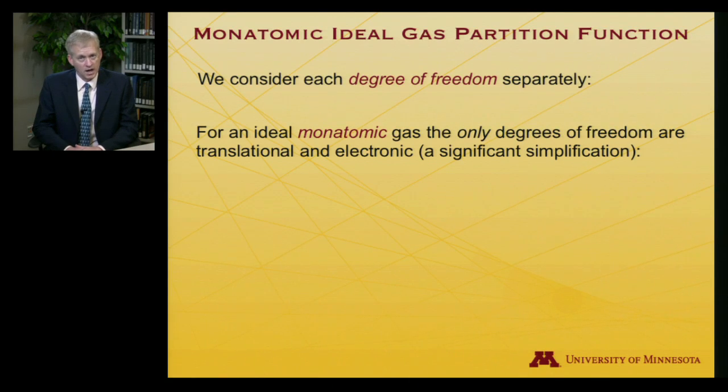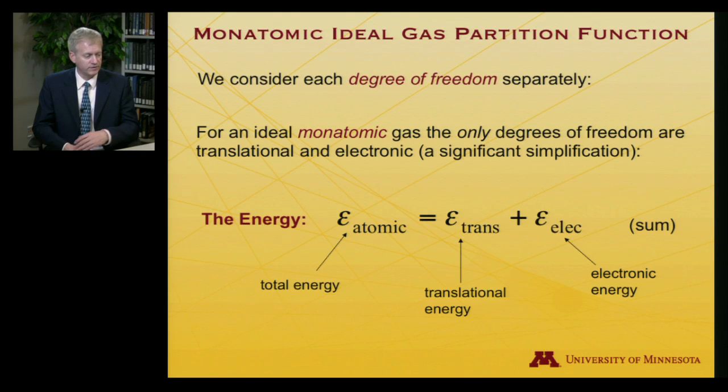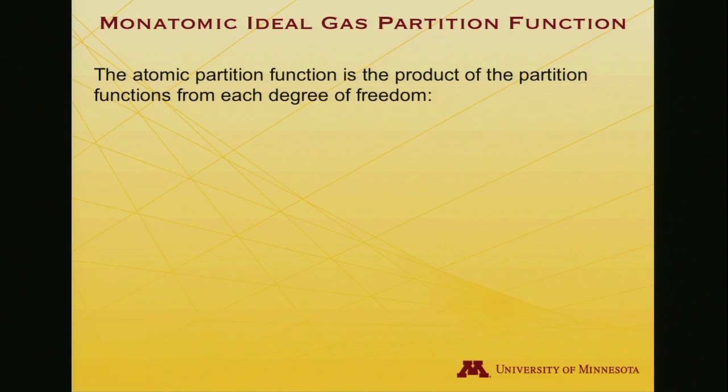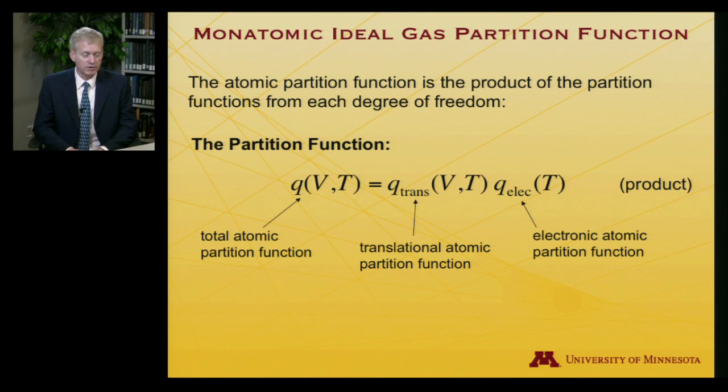Let's consider each degree of freedom separately. For an ideal monatomic gas, the only degrees of freedom that are available are translational, and then there's electronic energy as well. That's a significant simplification. The total energy of an atom in an atomic ideal gas would be its translational energy summed with its electronic energy.